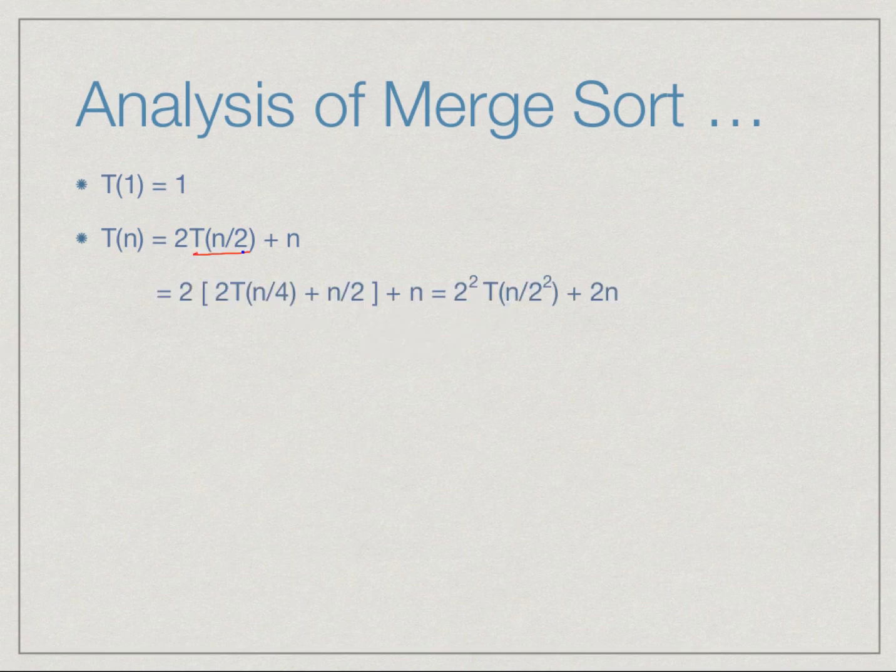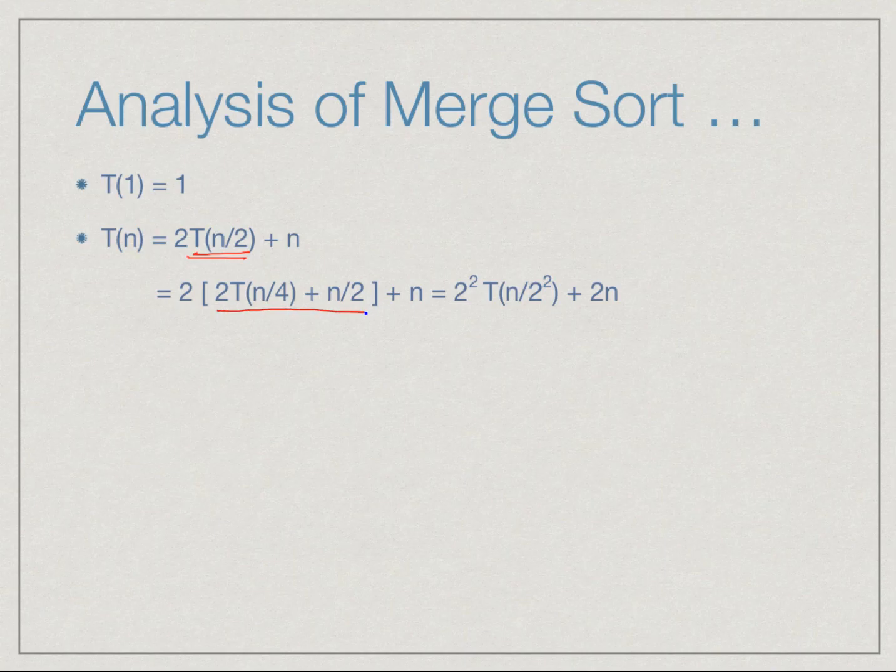So if we expand this out, we substitute for T(n/2), we get 2 times T(n/4) plus n/2. If we rewrite this, we write 2 times 2 as 2 squared and this 4 as 2 squared. We will find that this is equivalent to 2 squared T(n/2 squared). And now notice that you have 2 times n/2 here, so this 2 and this 2 will cancel, so you have one factor of n and another factor of n.